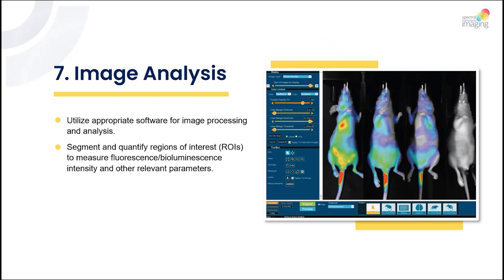Number seven: image analysis. Utilize appropriate software for image processing and analysis. Segment and quantify regions of interest to measure fluorescence or bioluminescence intensity and other relevant parameters. You can use Spectral Instruments Imaging software to do that — download it from our website at spectralinvivo.com/software.